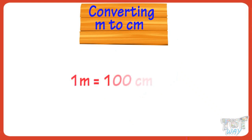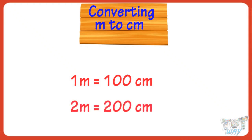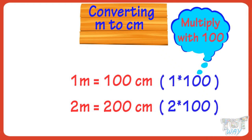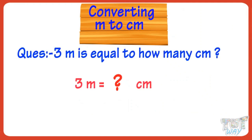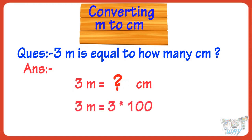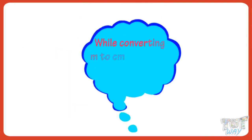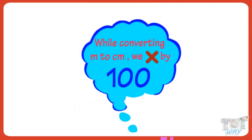Now let's learn converting meters to centimeters. 1 meter equals 100 centimeters. So 2 meters equals 200 centimeters — that is, we multiply with 100. 3 meters will be equal to how many centimeters? It will be 3 multiplied by 100, so we get 300 centimeters. So kids, we multiply with 100 if we want to convert meters to centimeters.